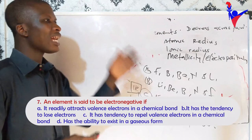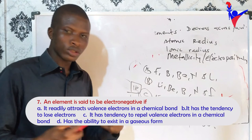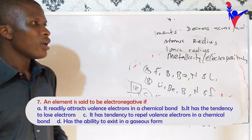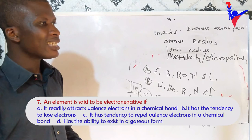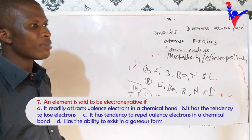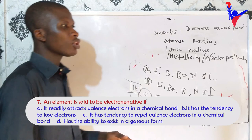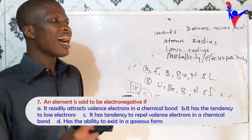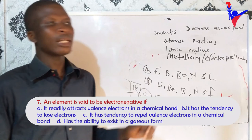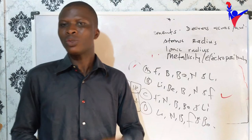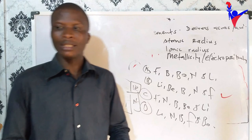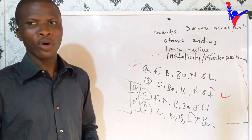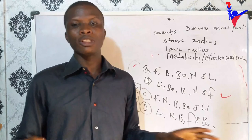An element is said to be electronegative if it readily attracts bonding electrons in a chemical bond. Option B — tendency to lose electrons — is wrong. Option C — tendency to repel electrons — is wrong. Option D is also wrong. The correct answer is option A: an atom is electronegative if it readily attracts bonding electrons toward itself in a covalent bond. Thank you for your attention — please subscribe to Science Ignite Africa.